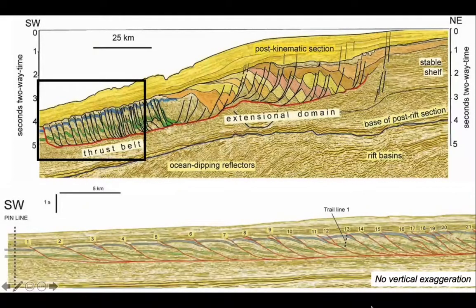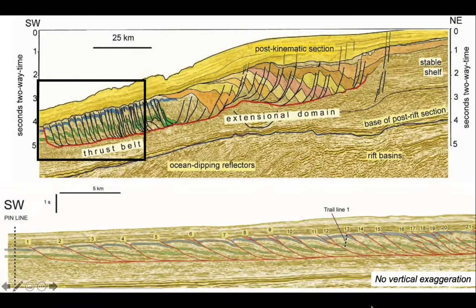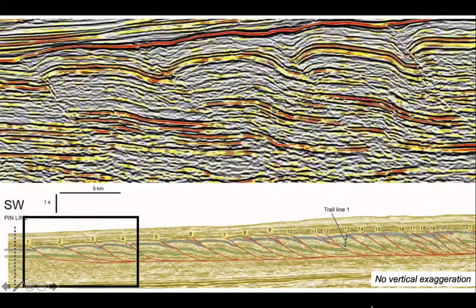Let's look at the thrust belt. The bottom profile has effectively no vertical exaggeration and shows a really regular set of thrust structures that stack up these sediments. There's a basal detachment with an imbricate system climbing off it, stacking up the stratigraphy. It's then blanketed by a post-kinematic wedge of strata which runs back up the slope. Zooming in reveals spectacular imagery with reflectors betraying the geometry of the thrust slices.